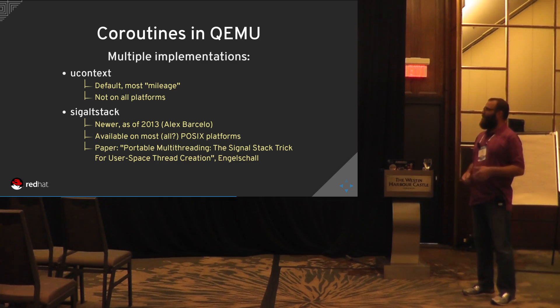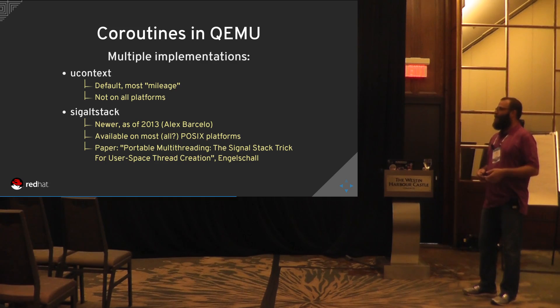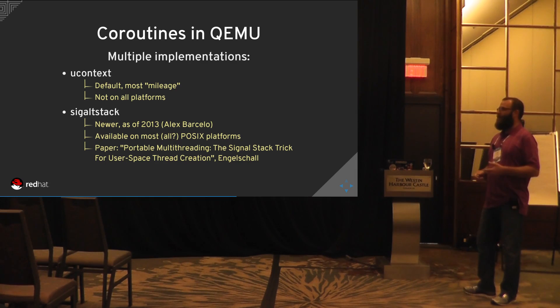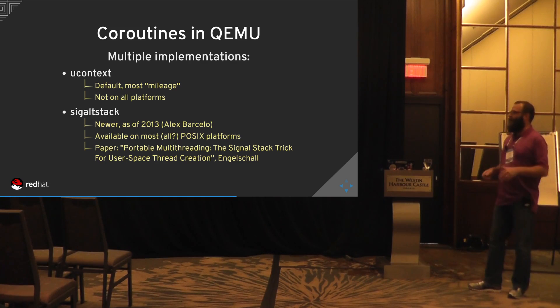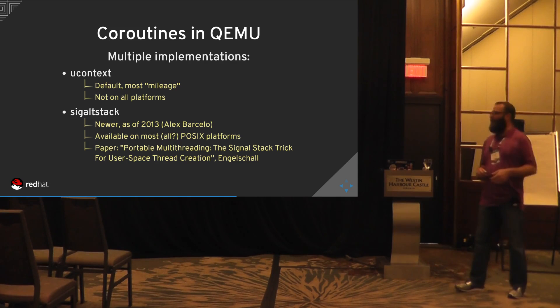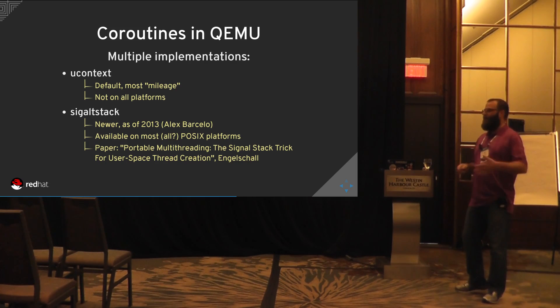SigAltstack is not the default yet in QEMU — my guess is it's just had less time being tested to build confidence. Running some perf tests, it seems to run more or less equal to uContext in time, which makes sense. If you look at the underlying implementations, they are very similar between uContext and SigAltstack — the main difference is just how the initial context is created. The coroutine switching and yields are very similar between them, and that's where the bulk of runtime is spent.